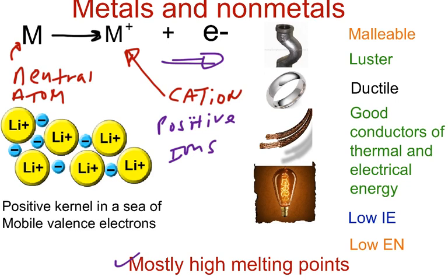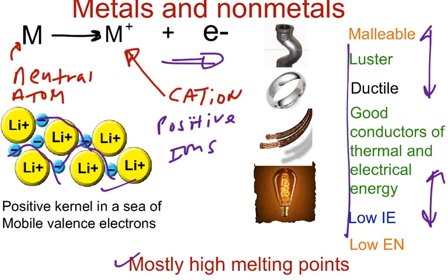And they have this ability in terms of doing that and also on these properties right here. They have this ability because they have mobile valence electrons. Remember we said the positive kernel is located in a sea of valence electrons, which are delocalized. So that's this property right here called metallic bonding, which allows metals to have all these properties.